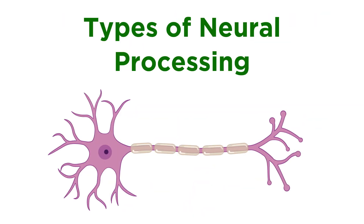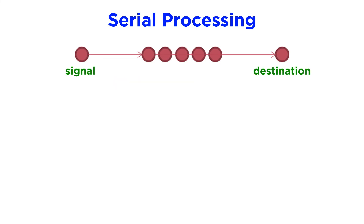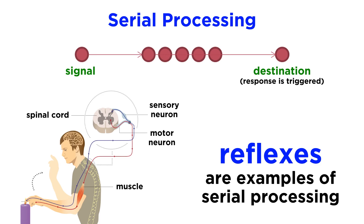With the types of circuits covered, let's quickly examine two types of neural processing. Serial processing is an all-or-nothing type of processing. A signal travels from one neuron to the next, eventually making it to its destination and triggering the desired response. Reflexes are examples of this type of processing.